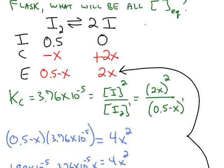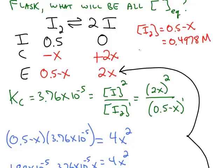That's going to give us the concentration of the reactant is 0.5 minus x. 0.5 minus x is 0.4978. And the units are molarity. The product is 2x. And that is going to be 4.34 times 10 to the negative 3 molar.